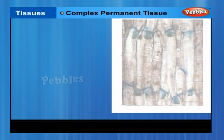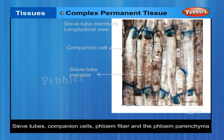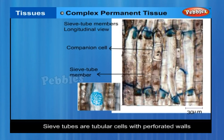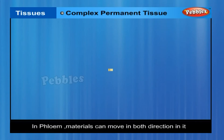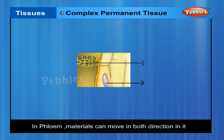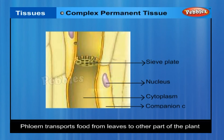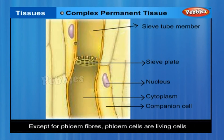Phloem is made up of four types of elements: sieve tubes, companion cells, phloem fibre and phloem parenchyma. Sieve tubes are tubular cells with perforated walls. Phloem is unlike xylem in that materials can move in both directions in it. Phloem transports food from leaves to other parts of the plant. Except for phloem fibres, phloem cells are living cells.